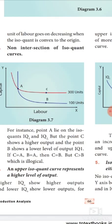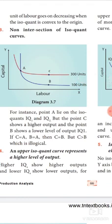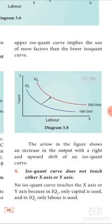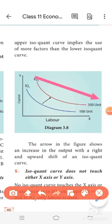The fourth property is that an upper isoquant curve represents a higher level of output, while a lower isoquant curve represents a lower level of output. For example, IQ3 shows higher output and a lower isoquant shows lower output. Looking at the isoquant map, the group of isoquant curves shows that IQ3 is the highest, representing 300 units of output, while curves below represent lower levels of output.